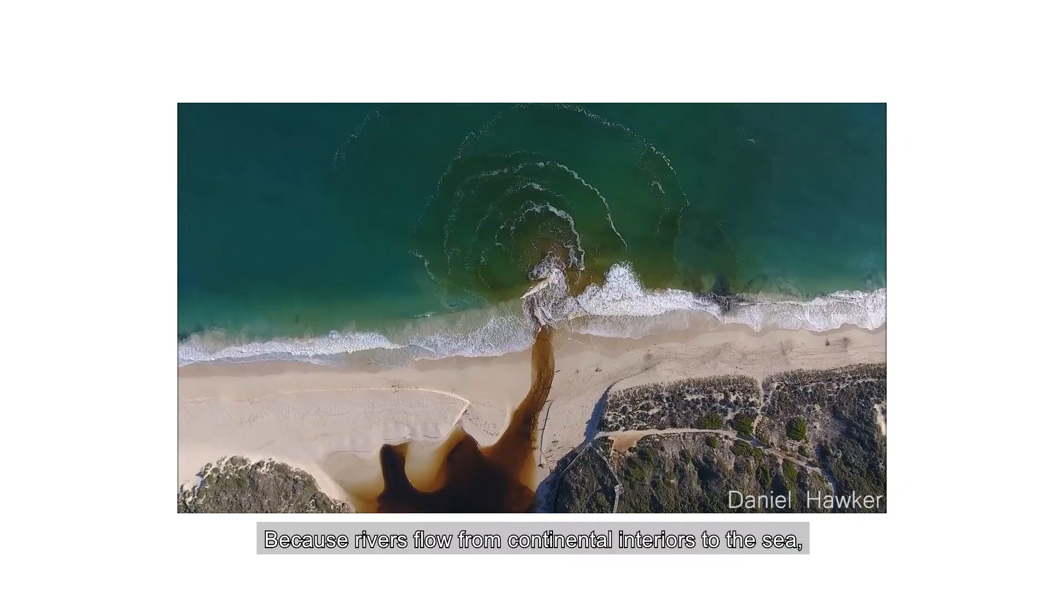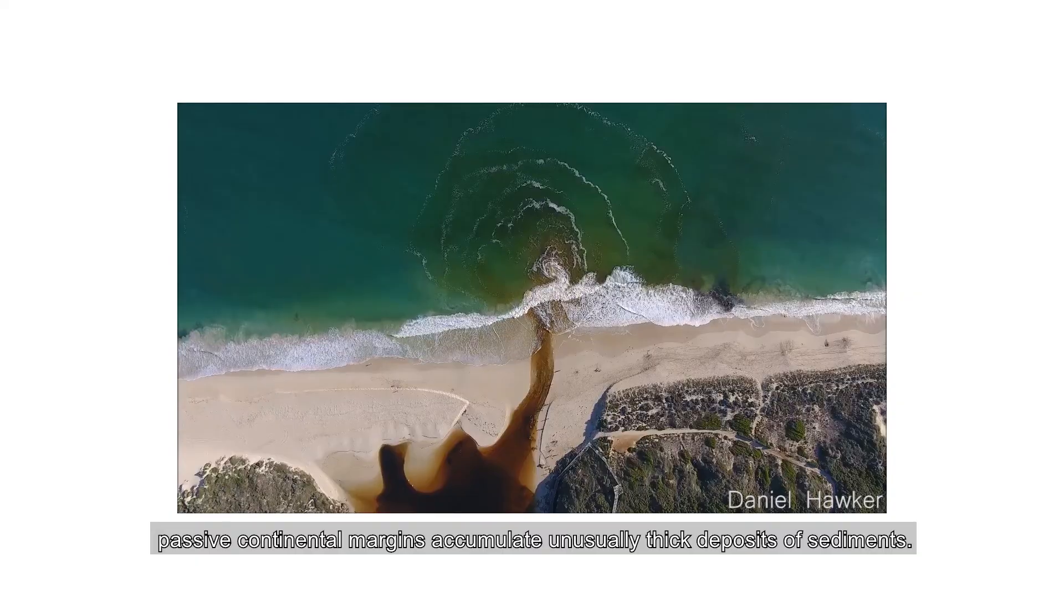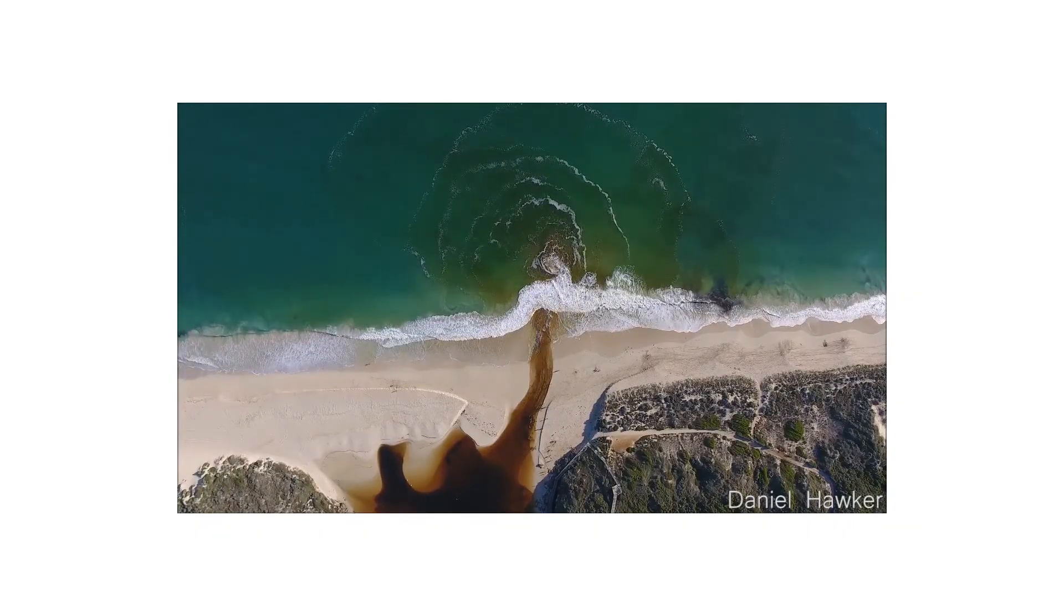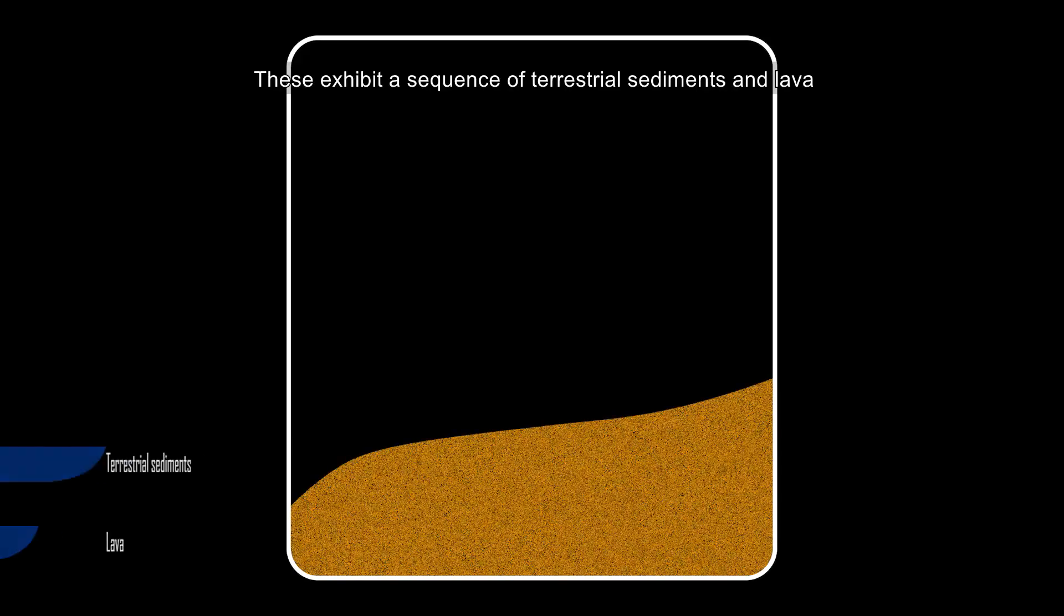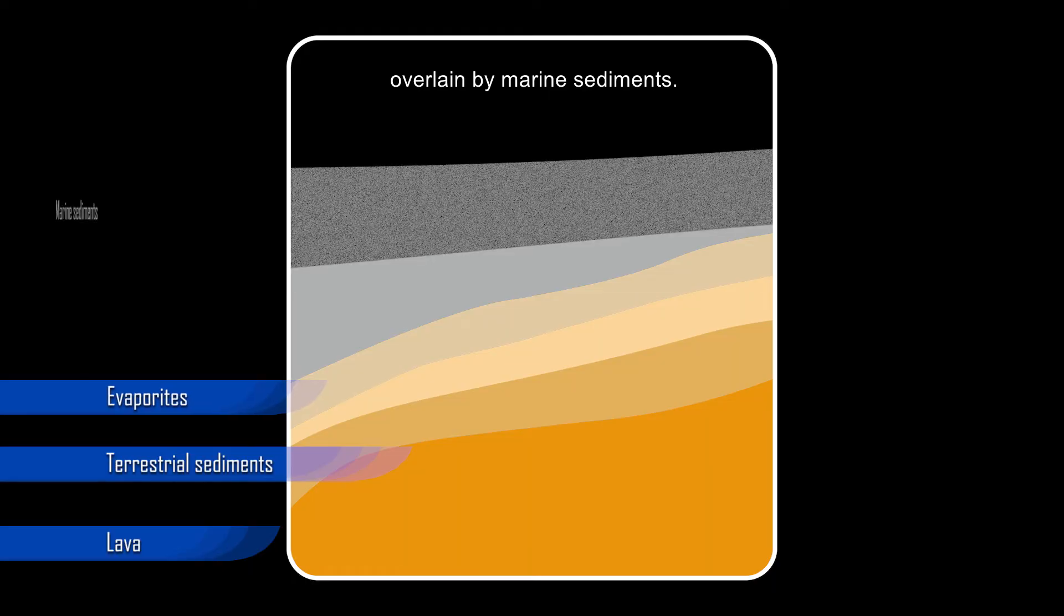Because rivers flow from continental interiors to the sea, passive continental margins accumulate unusually thick deposits of sediments. These exhibit a sequence of terrestrial sediments and lava, overlain by evaporites, overlain by marine sediments.